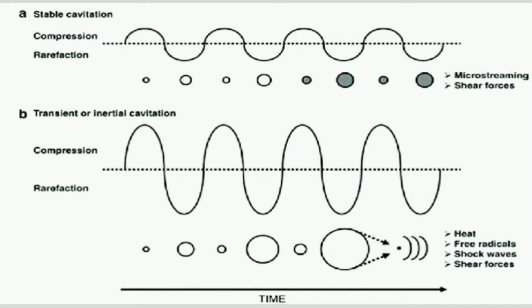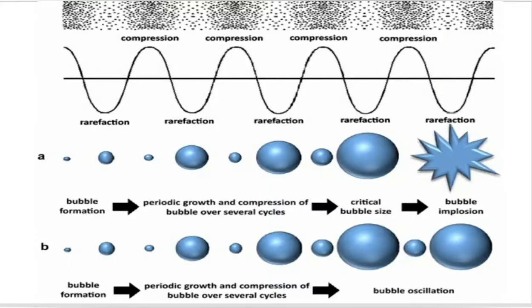Unstable cavitation occurs when the volume of the bubble changes rapidly and then collapses. As the bubble collapses, it produces a local rise in temperature which is potentially dangerous to the tissues. Unstable cavitation can be prevented by: using ultrasound intensity below 3 W/cm², using a pulsed source of ultrasound, and moving the treatment head continuously during treatment to avoid standing waves.